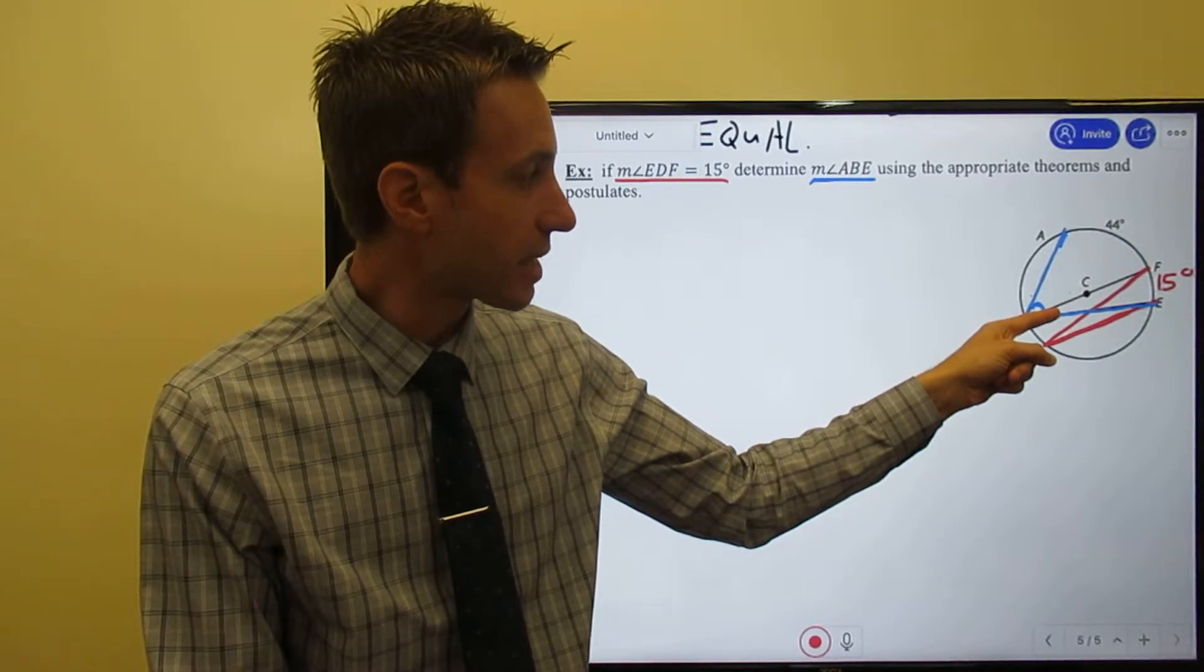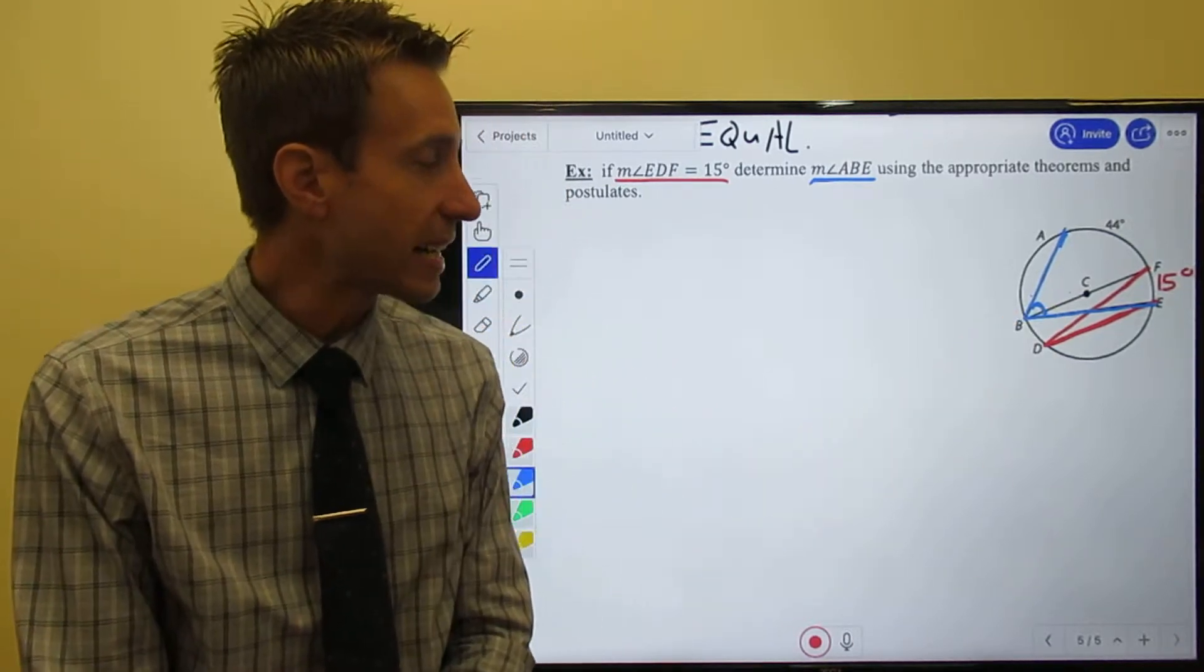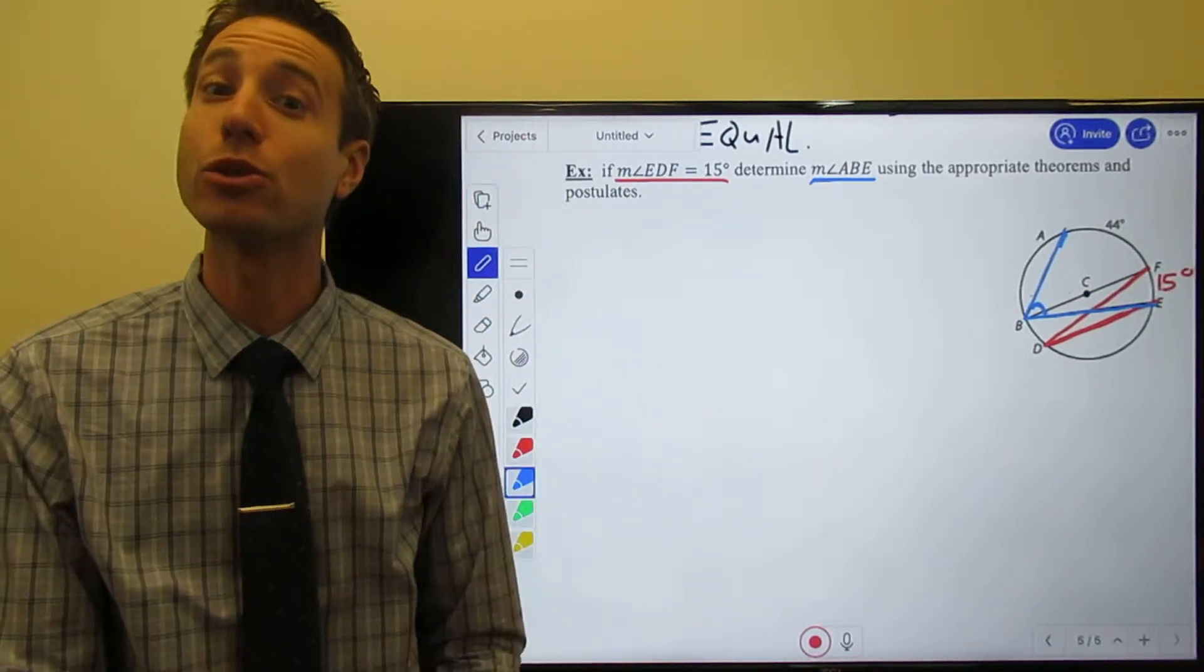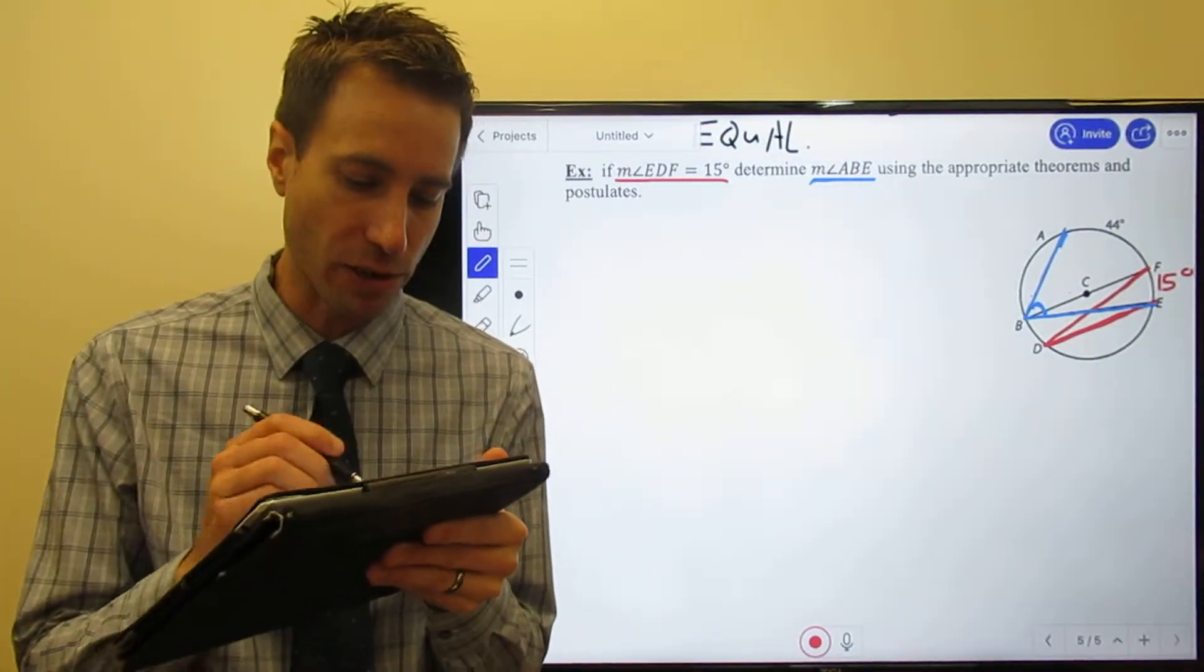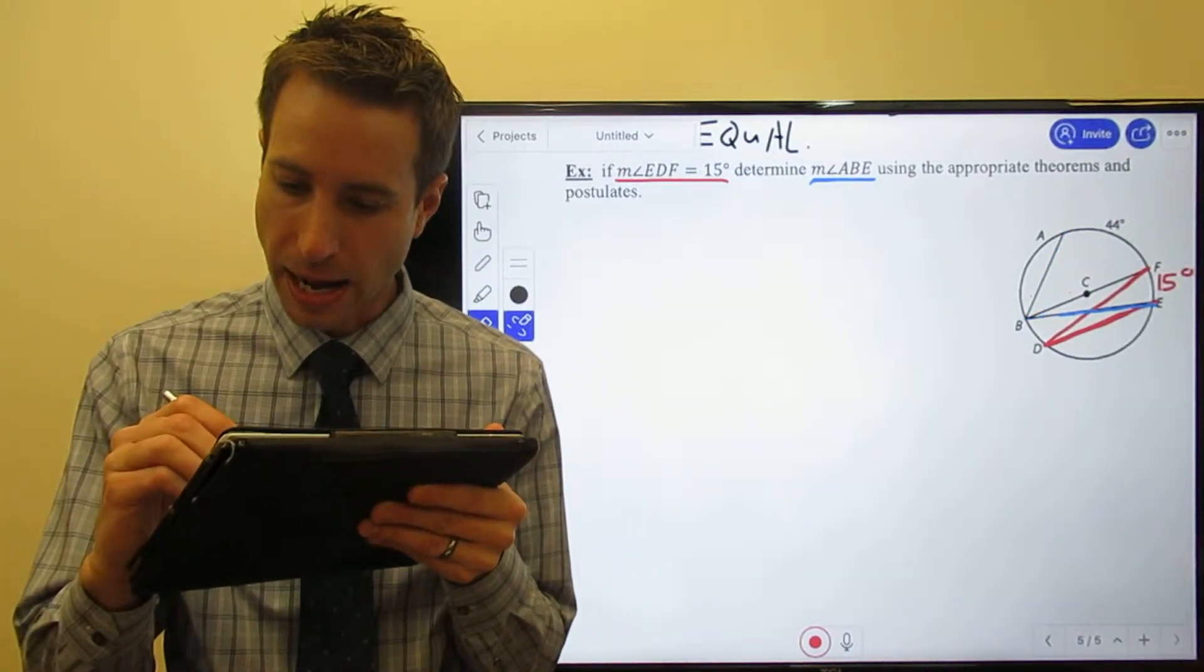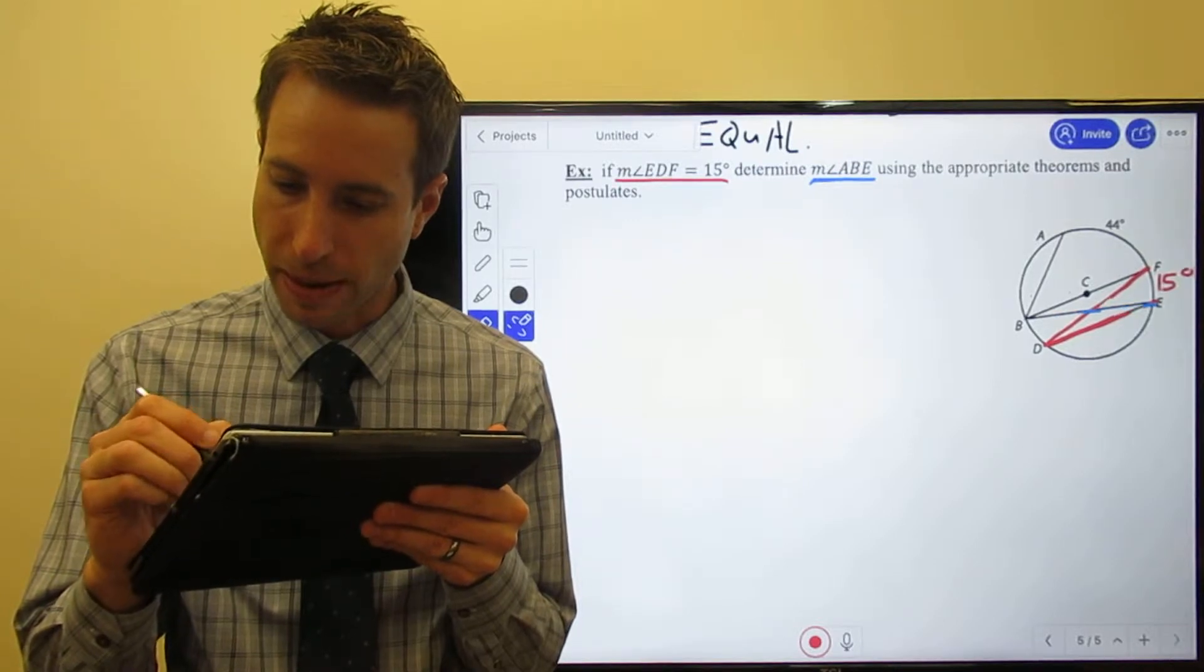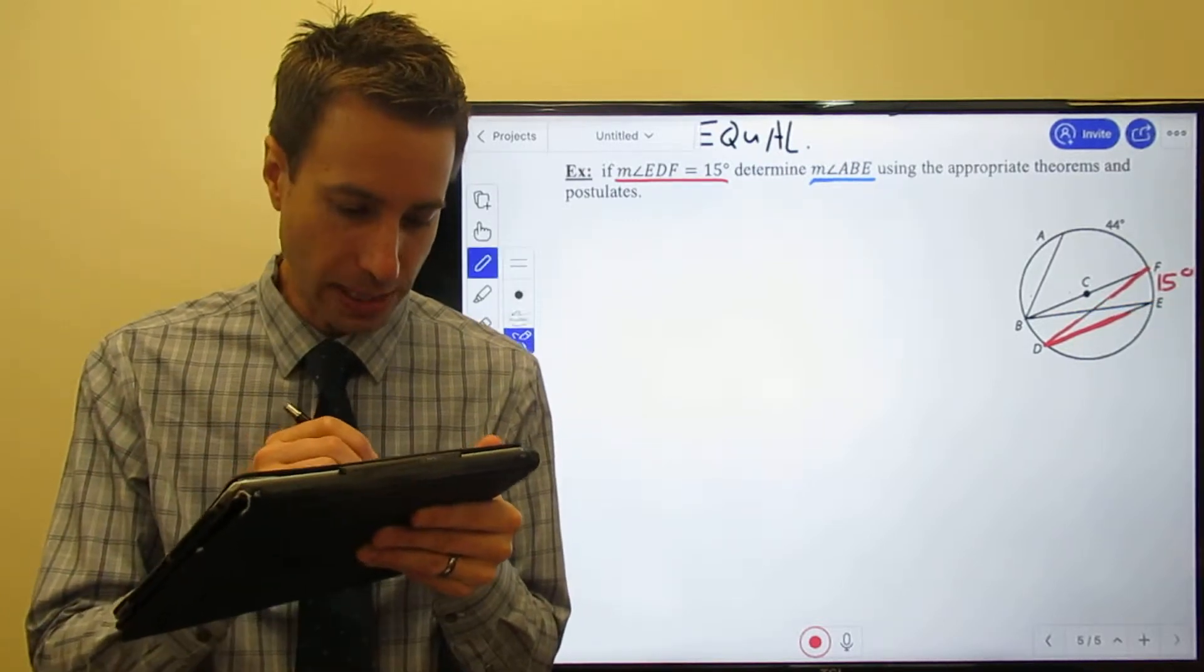But it still leaves me with this tiny sliver right in there. All right, so here's what we're going to do first. Let me erase that stuff in blue so that I don't overcomplicate my picture to help you see what's happening here.